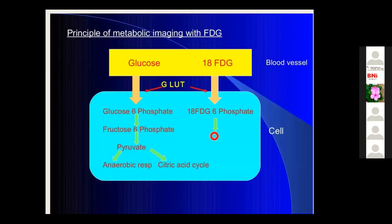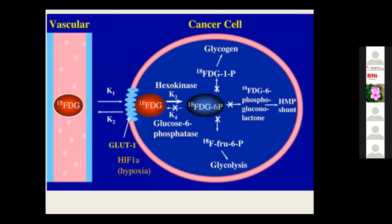F18-FDG is similar to glucose and enters inside the cell. It is also converted by hexokinase enzyme into F18-FDG-6-phosphate. However, after this conversion, it is not a substrate for the isomerase enzyme, so it cannot be converted into F18-fructose-6-phosphate. It is not part of glycolysis and cannot be reversed. Therefore, it is stored inside the cells.